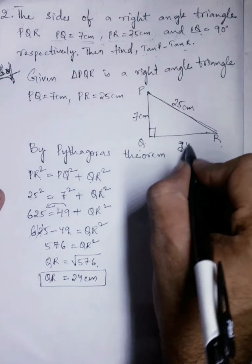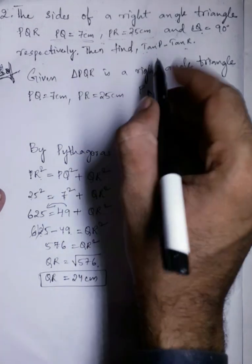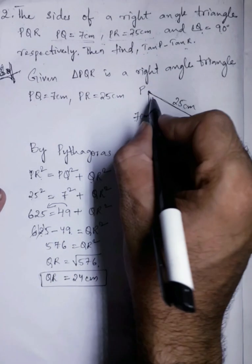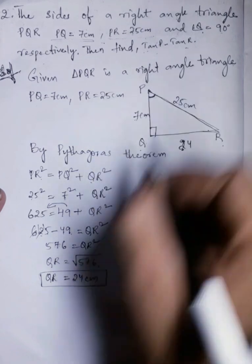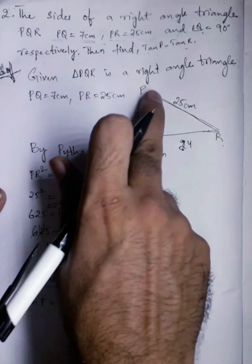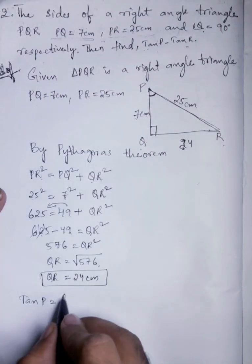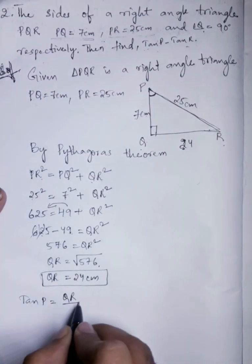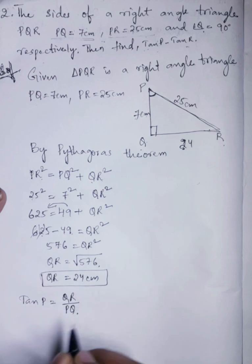Now we have got the value of QR. Then we will find the tanP. TanP means from P we have to see. So tanP equals opposite by adjacent. Opposite is QR by adjacent is PQ. QR is 24 cm, PQ is 7 cm.